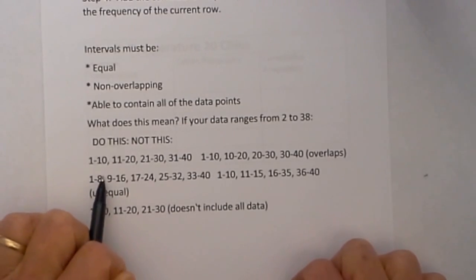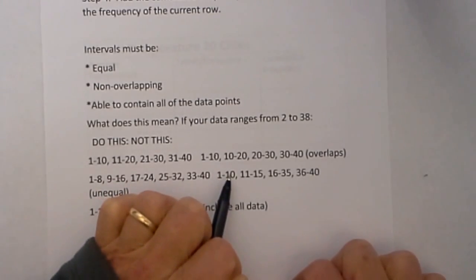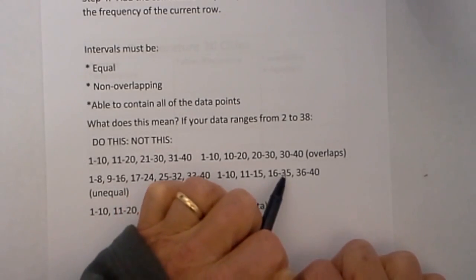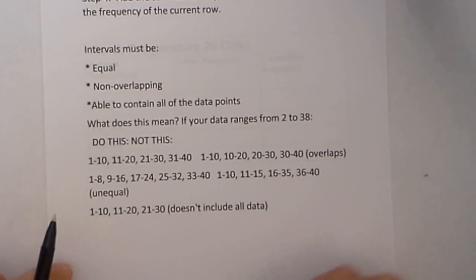Next, we have unequal. This goes up by 8. 1 to 8, goes up by 8, goes up by 8. But look at these intervals. We go up by 10, 5, 9. So they are unequal.